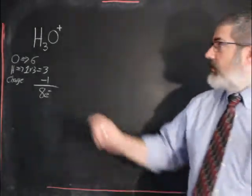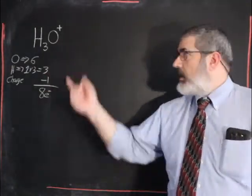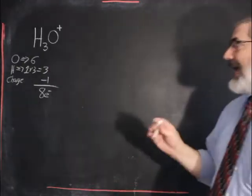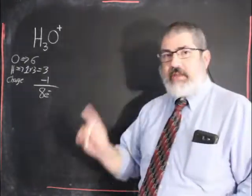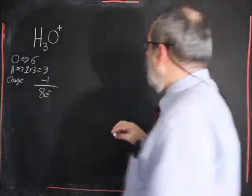Electrons are negative, so a positive charge means we remove one from the total valence. Eight electrons. Hydrogen can never be the central atom, so oxygen is our central atom.